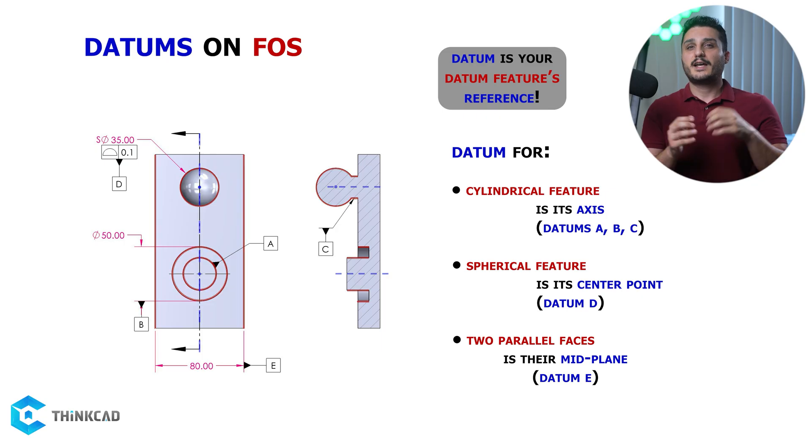You can define an axis as your datum when you point to the walls of a cylindrical feature of size. You can also have your datum letter under your feature control frame that is pointing to your feature of size.